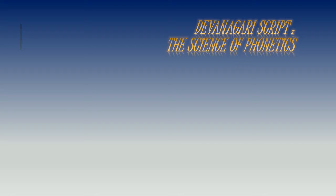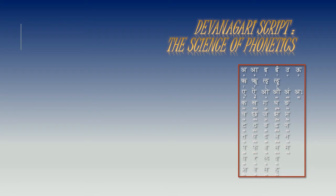As an introduction, let me speak the Devanagari alphabetical series first. Vowels are: A, A, E, E, U, U, E, A, O, O, N, AH, and RI.